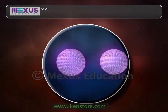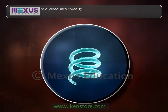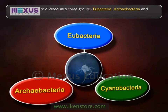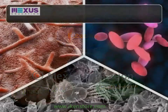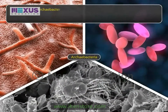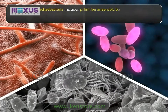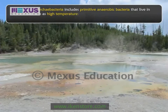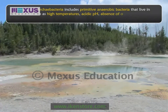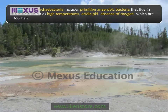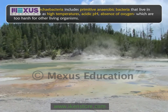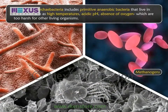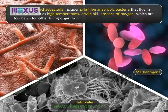Monerans are divided into three major groups: Eubacteria, Archebacteria, and Cyanobacteria. The sub-kingdom Archebacteria includes primitive anaerobic bacteria that live in conditions such as high temperatures, acidic pH, and absence of oxygen — conditions too harsh for other living organisms. The sub-kingdom Archebacteria includes methanogens, halophiles, and extreme thermophiles.